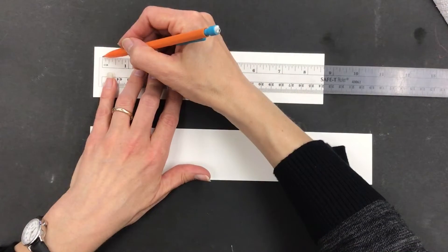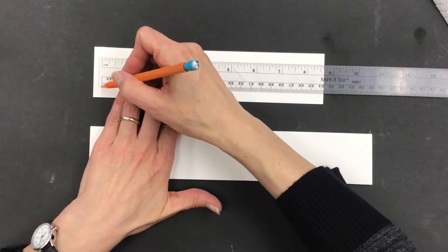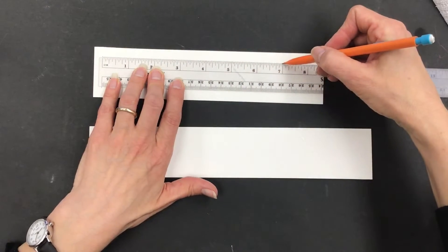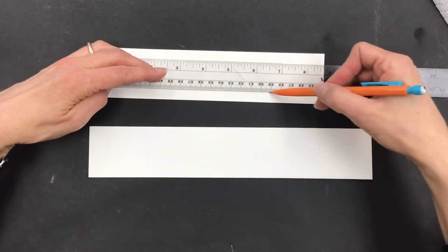So I'm just gonna make a little tally mark at zero and zero, and I'm just gonna go on both sides of the ruler. Seven inches is a good amount, so I'm gonna go to seven inches.